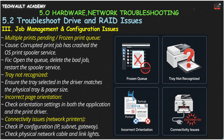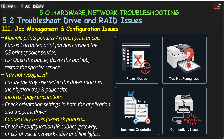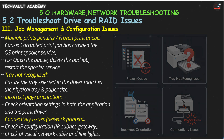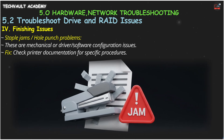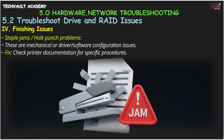If you get an incorrect page orientation, check the orientation settings in both your application and your print driver defaults. And don't forget connectivity issues. If your network printer isn't responding, use your standard network troubleshooting: check the IP configuration, check the network cable, and look for link lights on the printer's network port. Finally, some printers have finishing issues. If you're getting staple jams or problems with a hole punch, your best bet is to check the printer's documentation for the specific procedure to clear the jam or configure the feature.